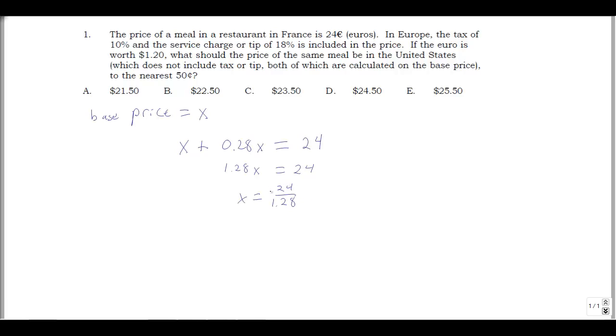So that's the number of euros that the base price is. And what we're going to do is convert that to dollars. So this is in euros. Put that over 1. And then I can multiply by 1 euro is worth 1.2 dollars, so it's $1.20. So then I can do my conversions. Euros cancel. And my answer should be 24 times 1.2 over 1.28 dollars.